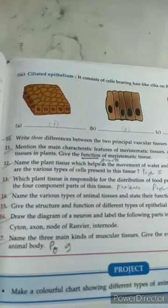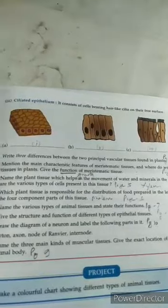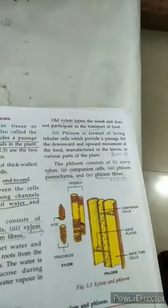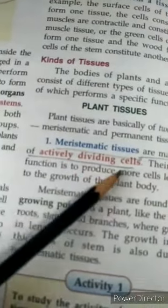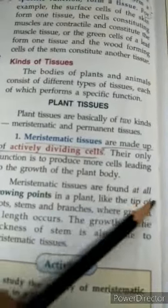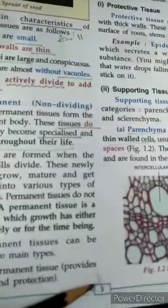Question number 11: mention the main characteristic features of meristematic tissue, where do you find them, and what are their functions? The characteristics of meristematic tissue are given on page number three. They are found in the actively dividing growing points of the plant — the growing parts. The function of meristematic tissue is growth.